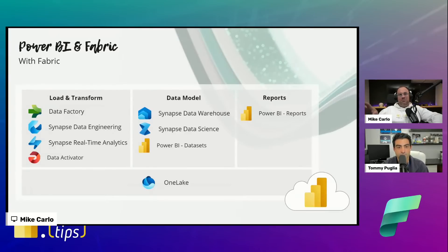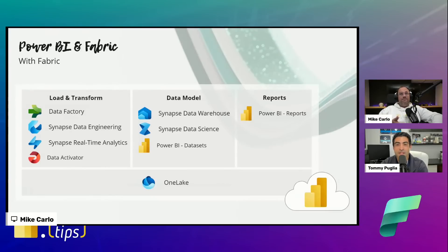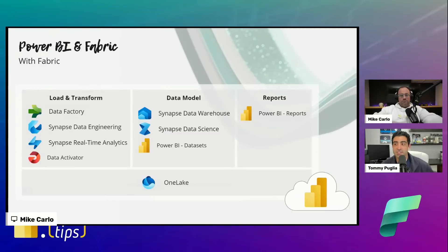We flip this same pattern over into Fabric — we still have those three blocks. The load and transform equivalent is still there, we still have data modeling with tables and relationships, and we have the reporting aspect. Now there are rich IT-based supporting tools: Data Factory, Synapse, data engineering, and Data Flows Gen 2, which is still a Power BI product living in the loading and transforming space. You may notice in this new diagram that OneLake sits underneath, where the Power BI model has in a sense been demoted and what's been promoted is the concept of Microsoft OneLake.